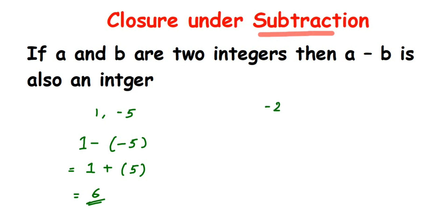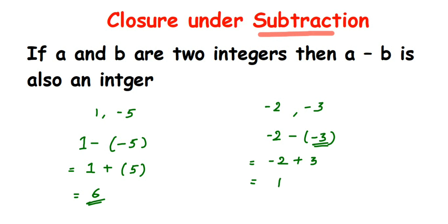Let us take negative numbers now: minus 2 and minus 3. Subtracting them: minus 2 minus (minus 3). The first integer remains the same, and instead of subtracting we add the additive inverse of the second number. The additive inverse of minus 3 is 3. So we get minus 2 plus 3, which equals 1, and 1 is also an integer.